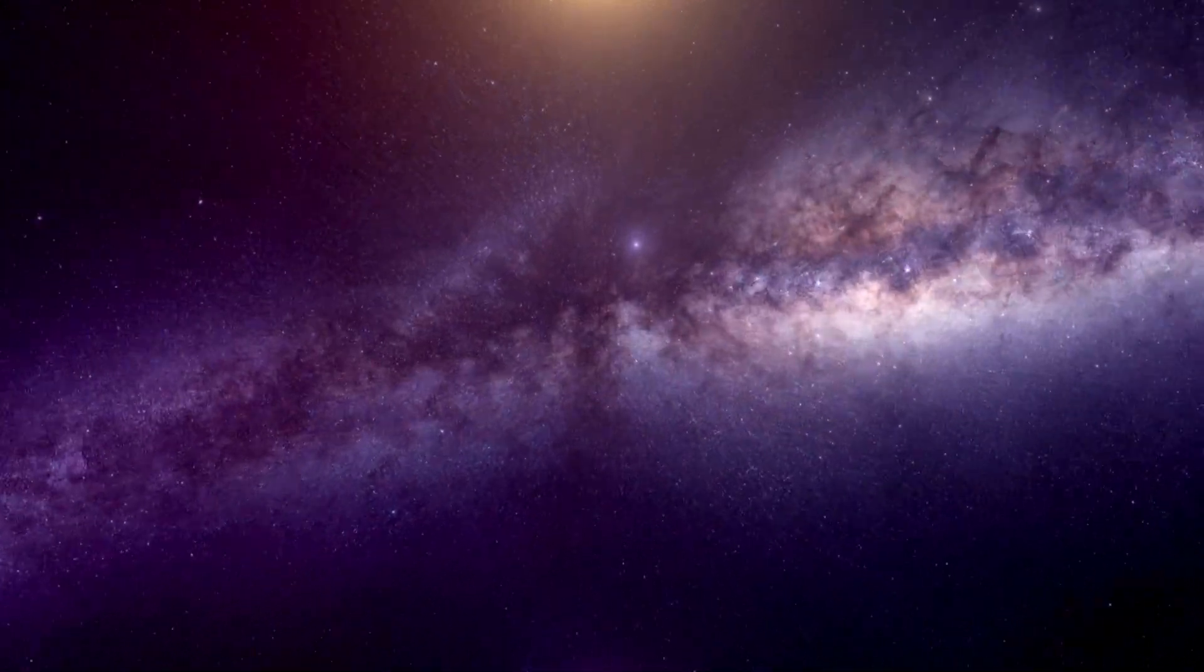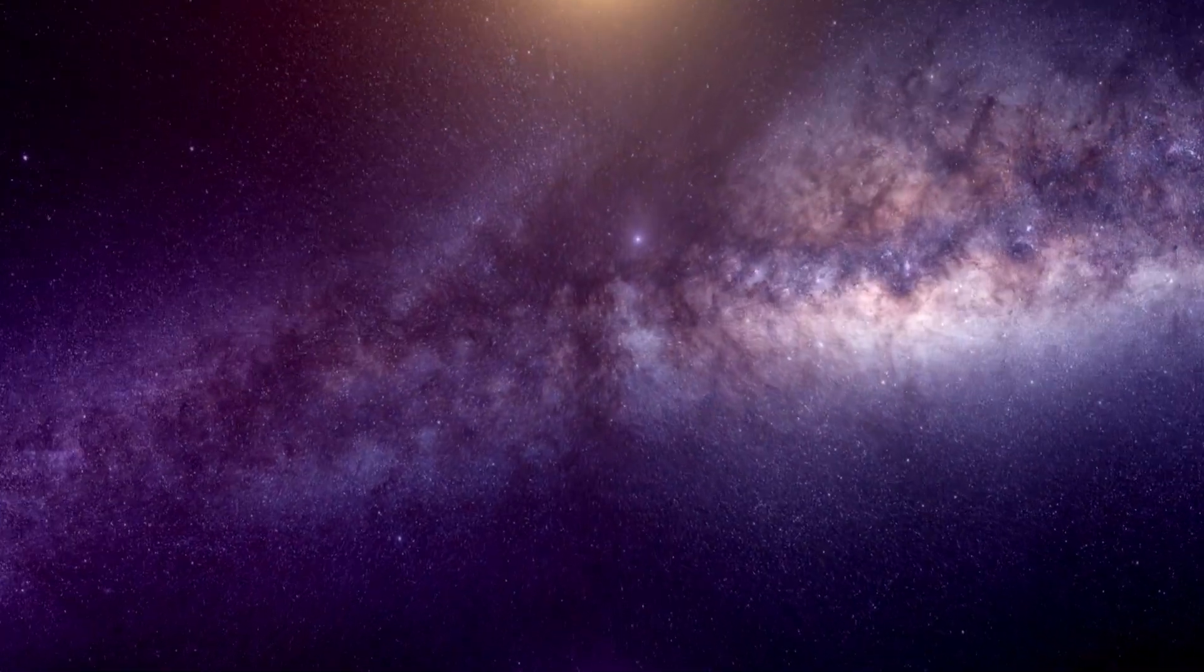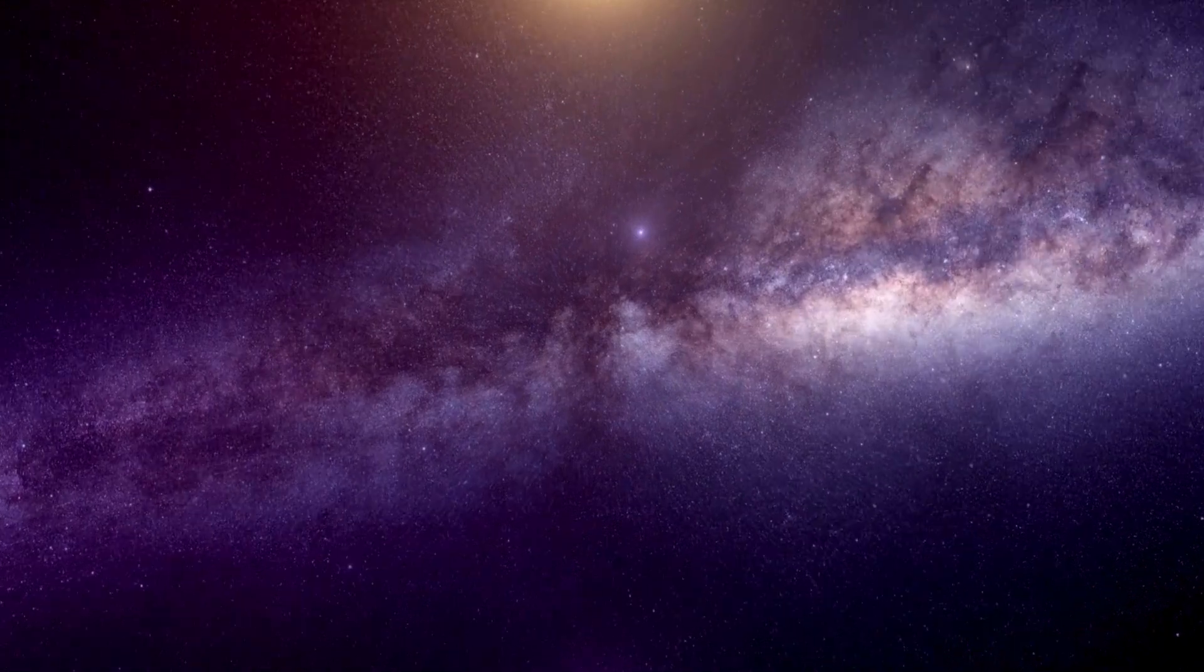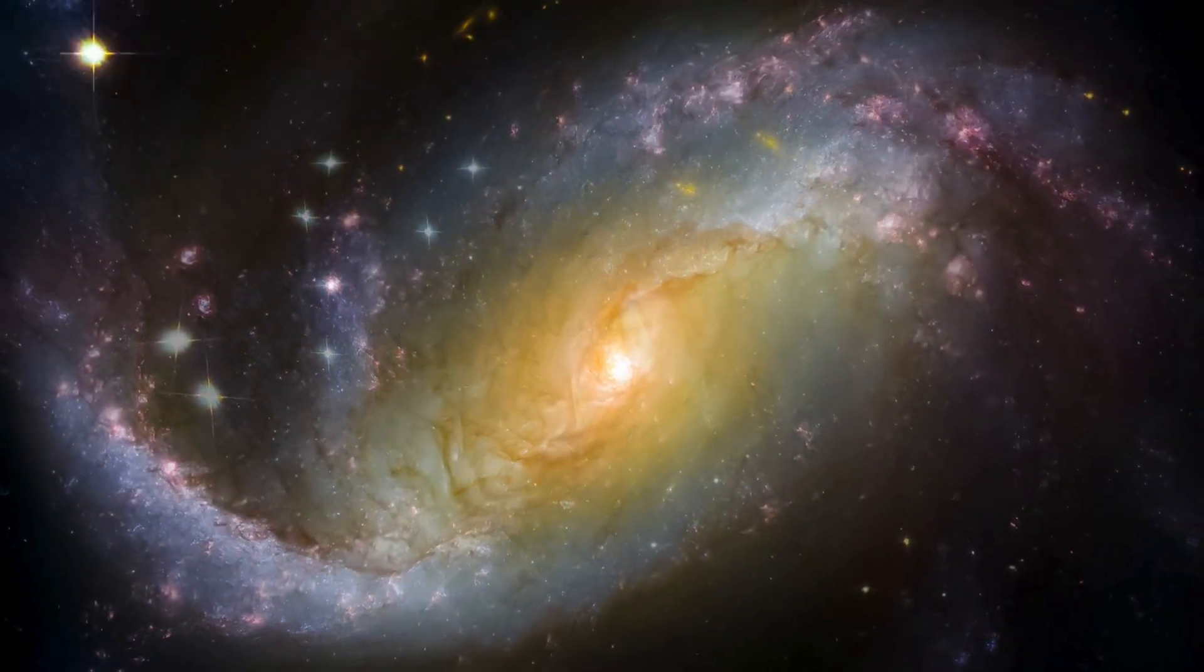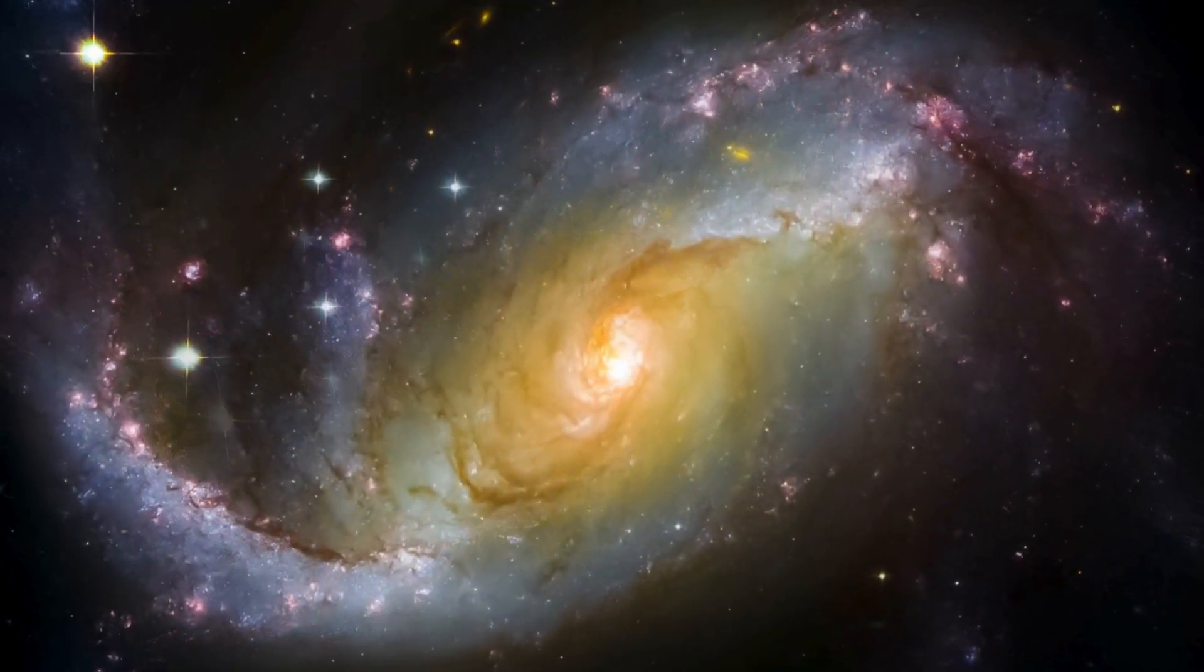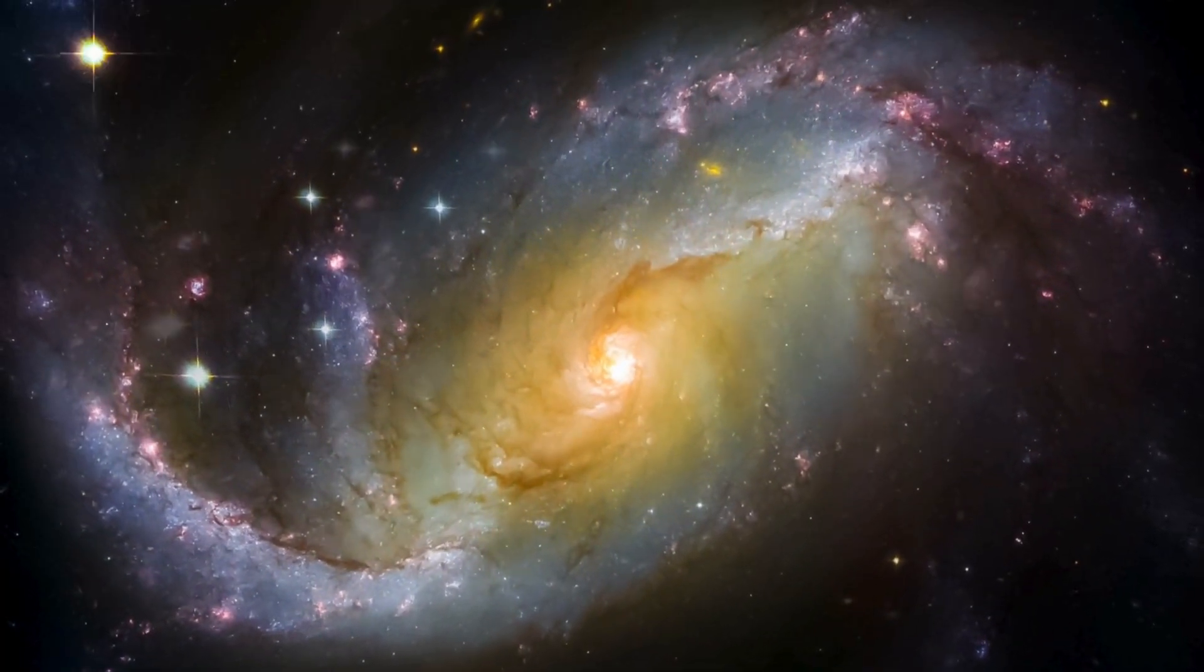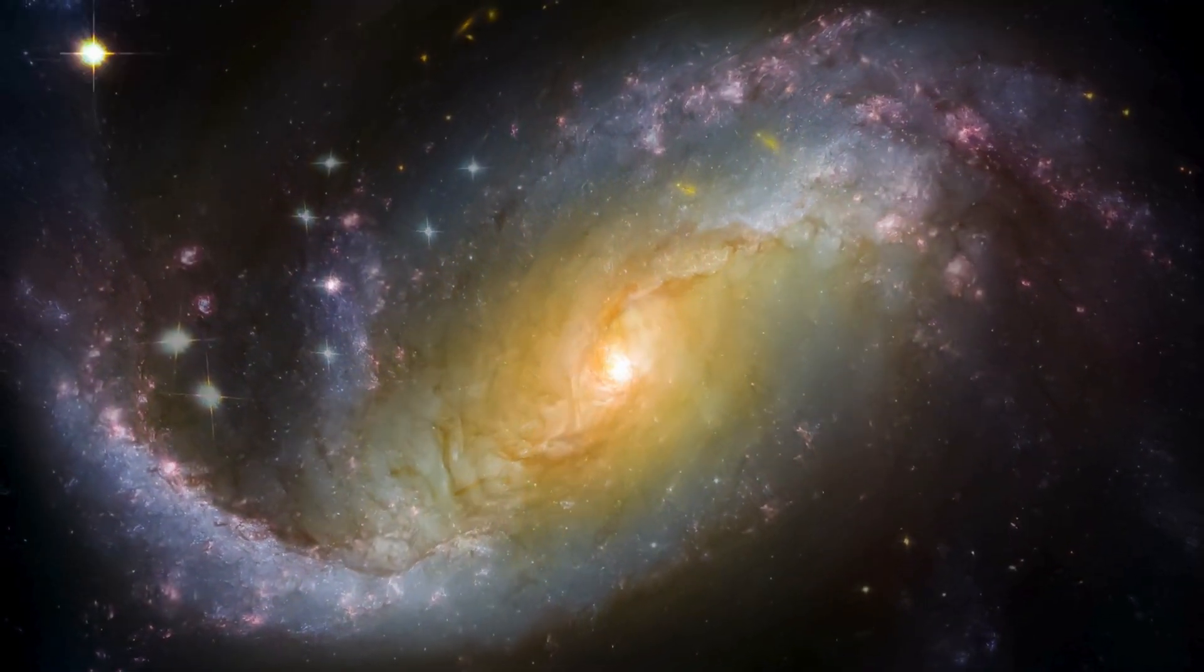What does it really mean for how we understand the universe's story? Finding out the early days were so much busier, so much more complex, with all these galaxies and supermassive black holes already forming. When you see maybe 10 times more galaxies than you thought should be there, what questions does that raise for you about just how fast things could happen right after the Big Bang? How did structures form so quickly? Definitely gives us a lot to think about.